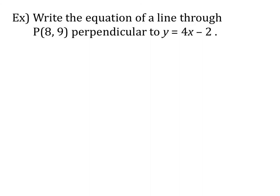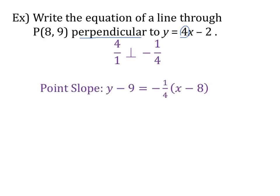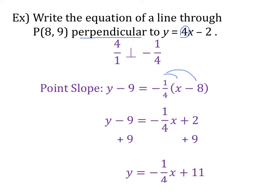Now let's try this example. Write the equation of a line through point (8, 9) perpendicular to y equals 4x minus 2. Perpendicular means opposite reciprocal. So if our original slope is 4, as a fraction that's 4 over 1, and the opposite reciprocal is negative 1 over 4. Now we have a point and a slope, so we use point-slope form: y minus y1 equals m times x minus x1. Filling in, we have y minus 9 equals negative 1 fourth times x minus 8. Distributing gives y minus 9 equals negative 1 fourth x plus 2. Adding 9 to both sides, our final equation is y equals negative 1 fourth x plus 11, which is perpendicular to our original line through the point (8, 9).